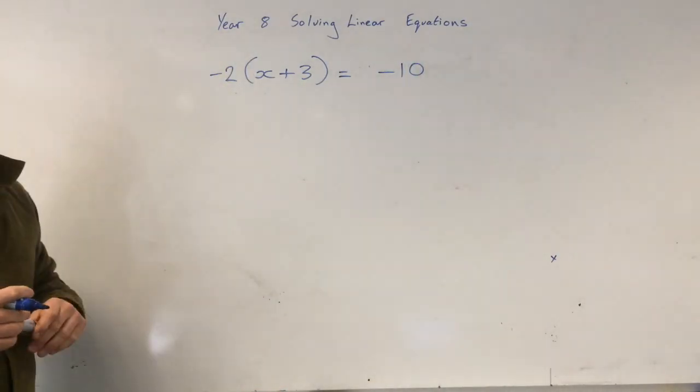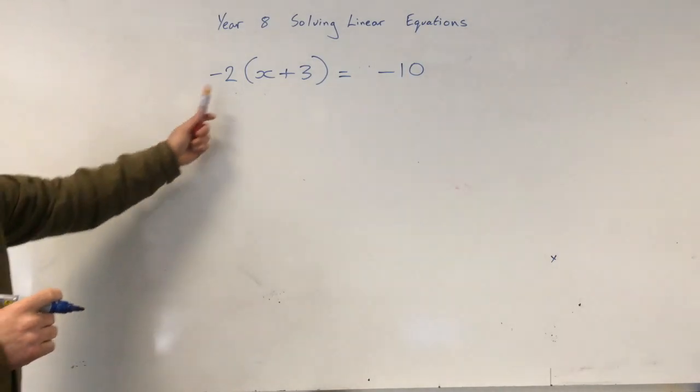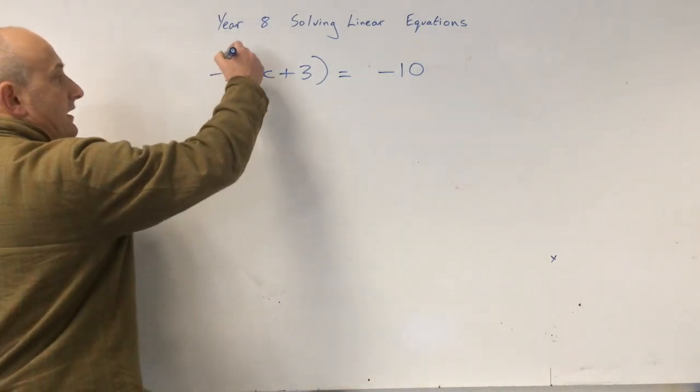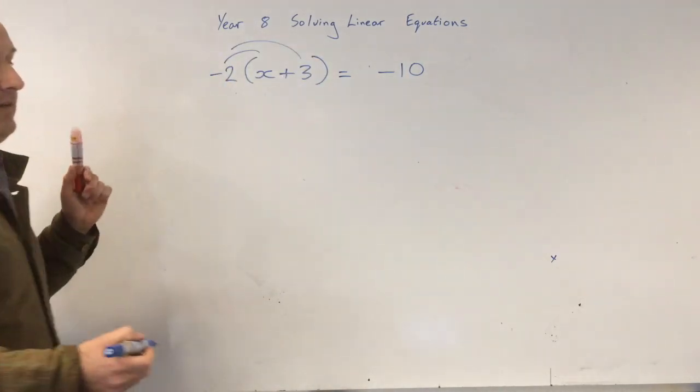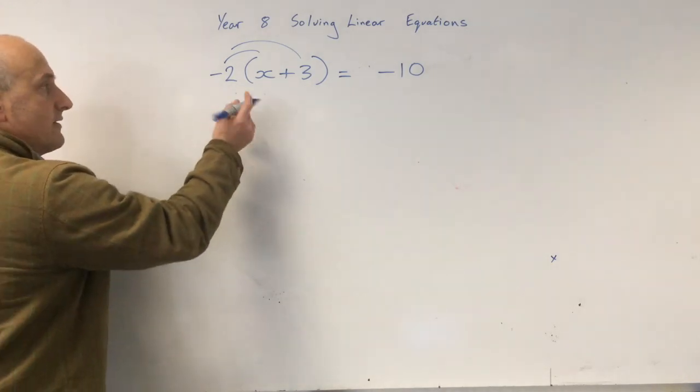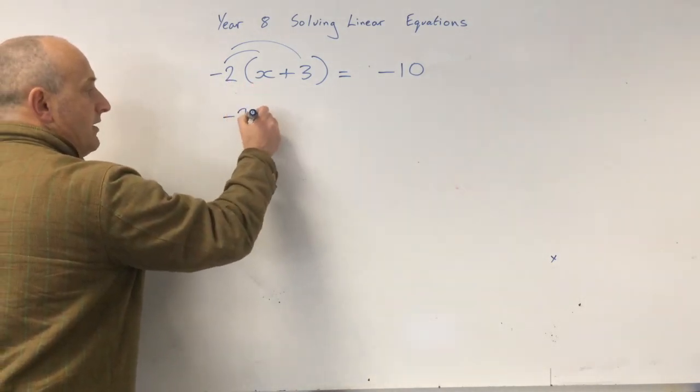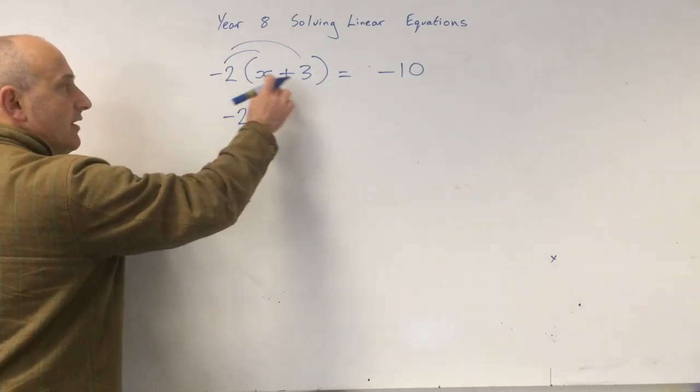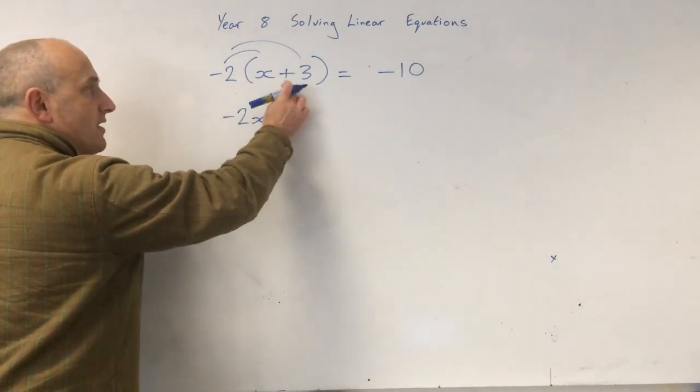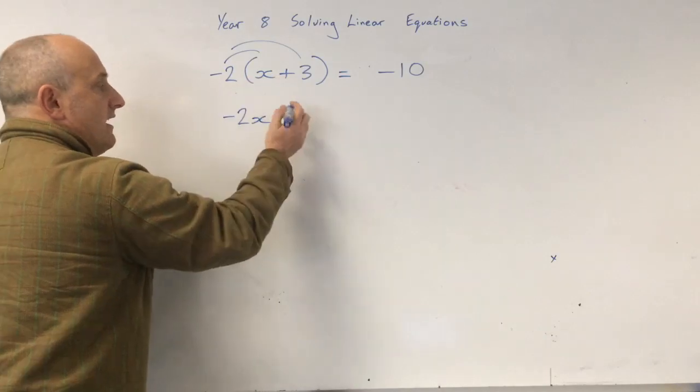Okay. Let's just do this. So now we're going to multiply out the brackets. Okay. So let's just multiply out the brackets. Minus 2 times x. Minus 2x. Minus 2. A negative times a positive is a negative. Minus 2 times 3 is minus 6.